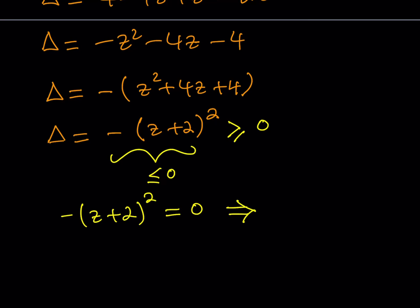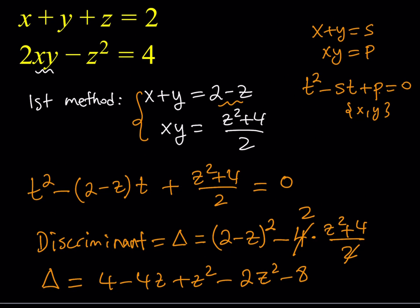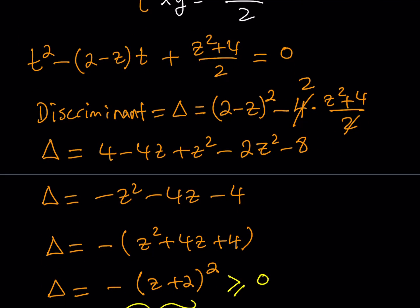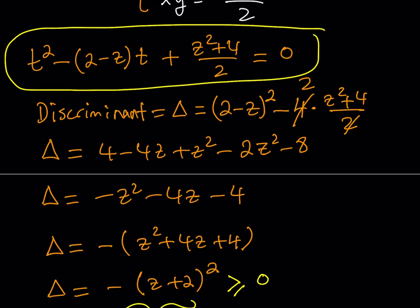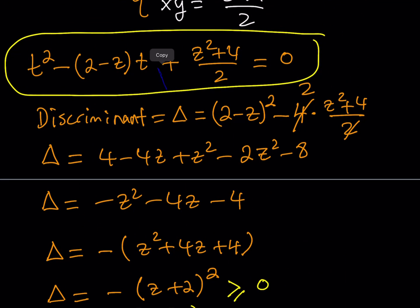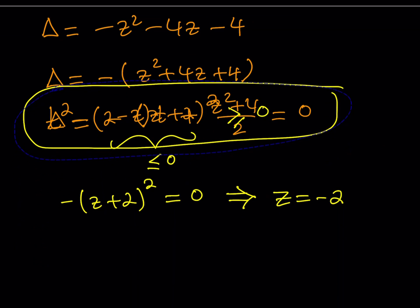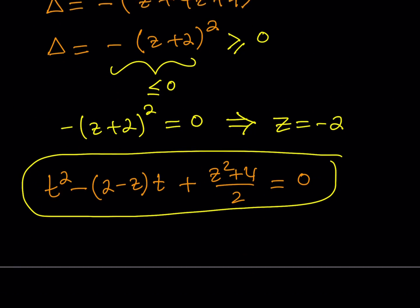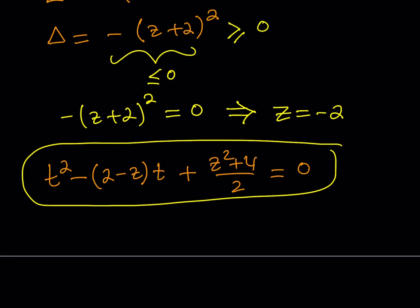This gives us the nice result: z equals negative 2. Now to find x and y, we can use the equation we generated in t. Substituting z equals negative 2: 2 minus negative 2 is 4, so we get negative 4t. And z squared is 4, so 4 plus 4 is 8, divided by 2 is 4. The equation in t becomes t squared minus 4t plus 4 equals 0.